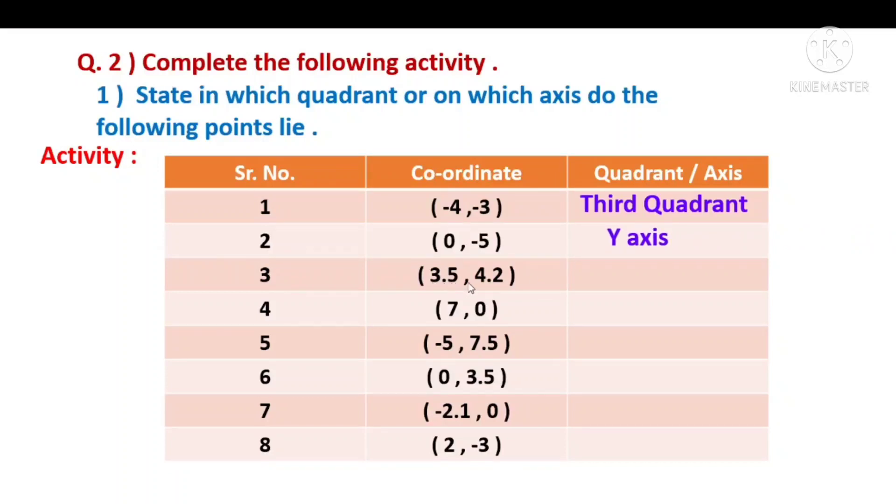Third point: (3.5, 4.2). Both are positive, meaning it's in the first quadrant. (7, 0) - here also 0, meaning the first x-axis coordinate, so it's on the x-axis. Point 5: minus and plus, first negative, second positive, meaning it's in the second quadrant. Point 6: (0, 3.5). When there's 0, it's on the x-axis.